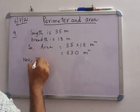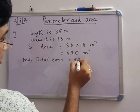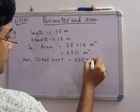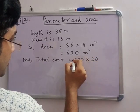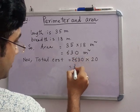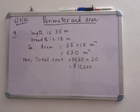Now rupees 20 per square meter is the cost of cultivating. So total cost is 630 into 20 rupees, which equals rupees 12,600. This is the total cost for cultivating.